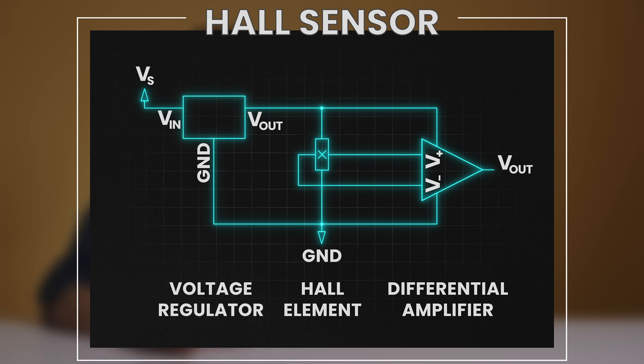To the output of the Hall element, we need to place an amplifier. This is because the Hall element provides only a few microvolts per gauss, seven microvolts in silicon to be exact. Because we want to amplify only the differential potential between the two points, we use a differential amplifier.